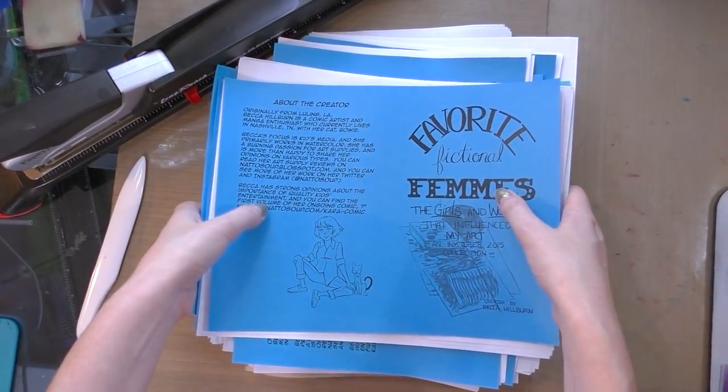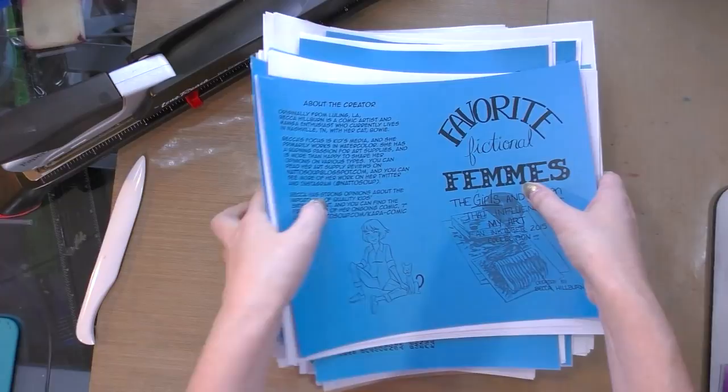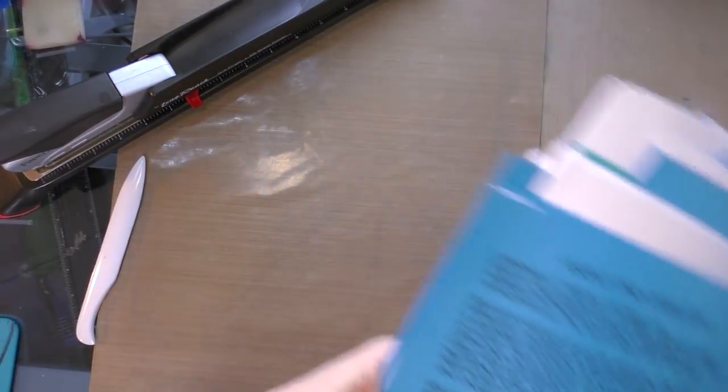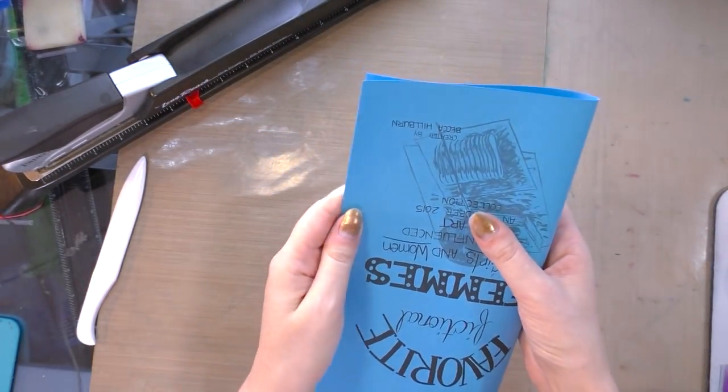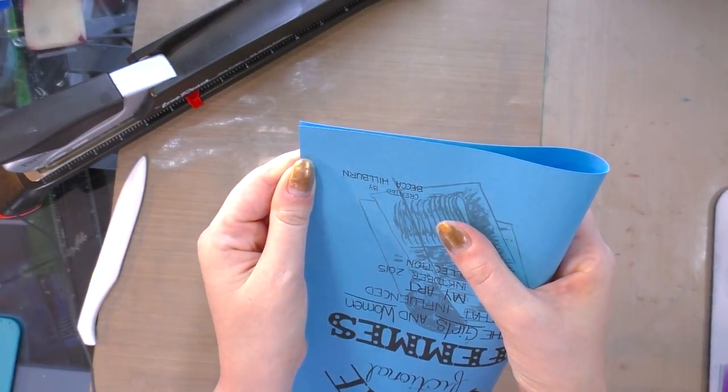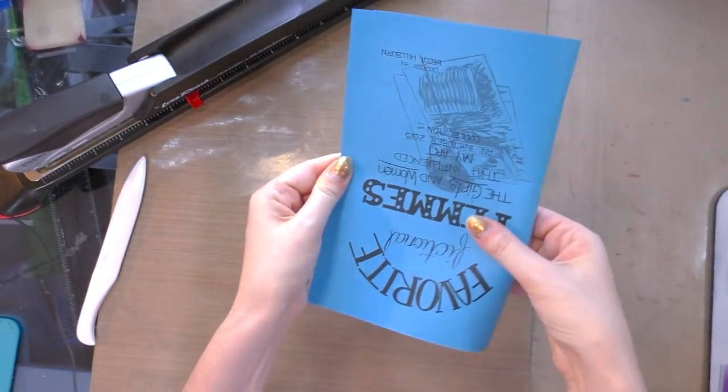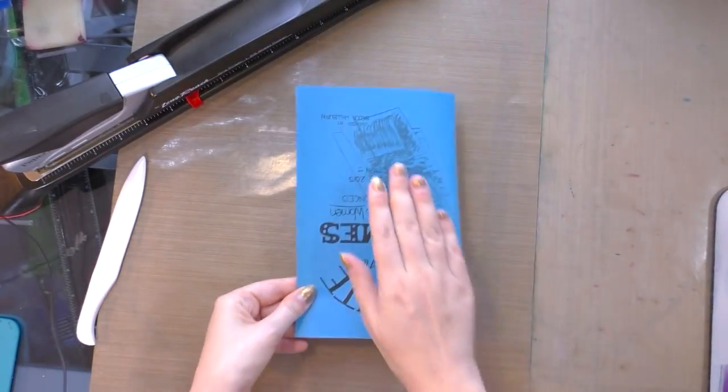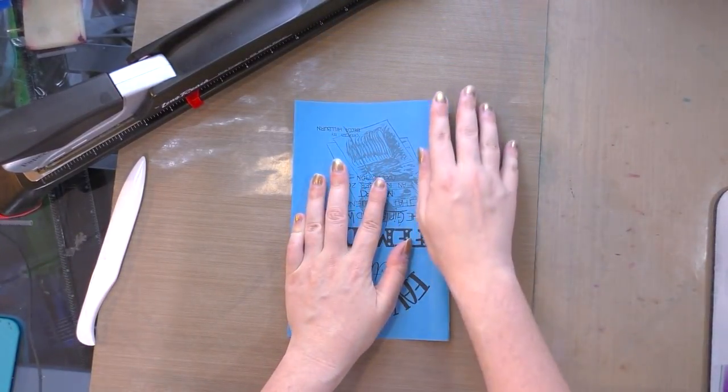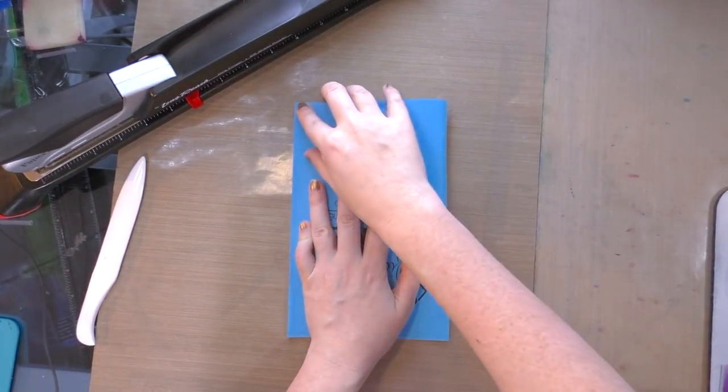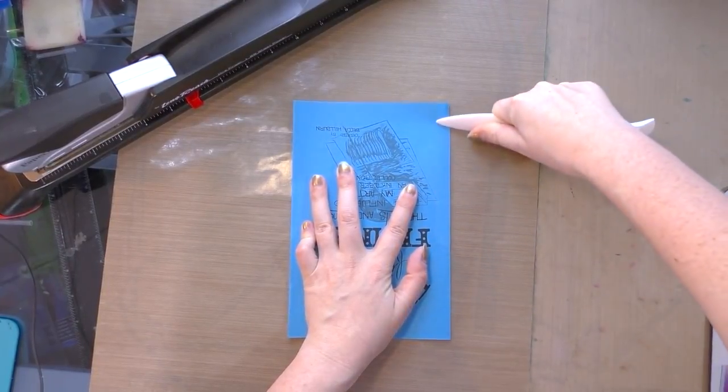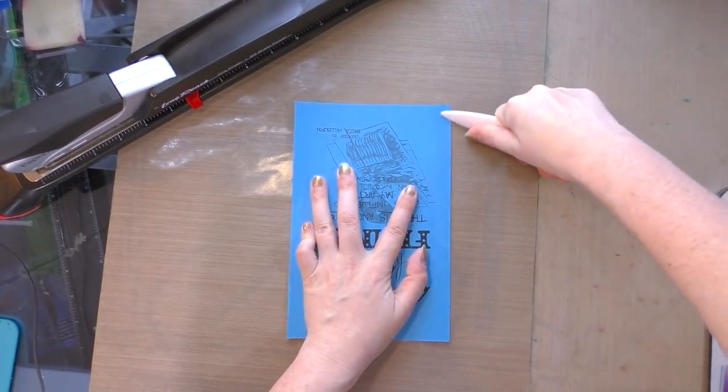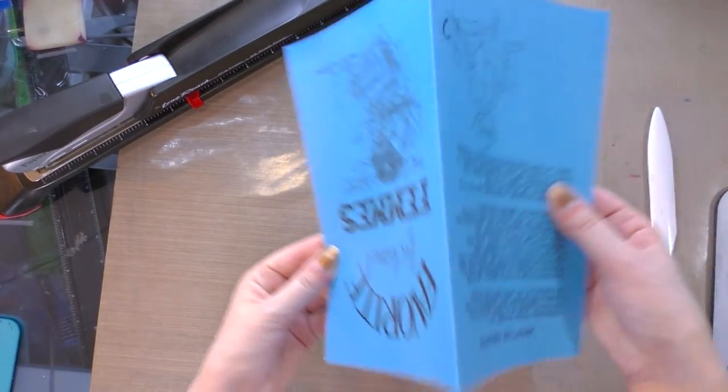So when I assemble these, what I will typically do is go ahead and pre-fold the cover. And this is so that I can get a nice clean, even fold. I don't even press this all the way down, I just make sure that the edges are lined up. And then I use my bone folder to get a nice clean crease.